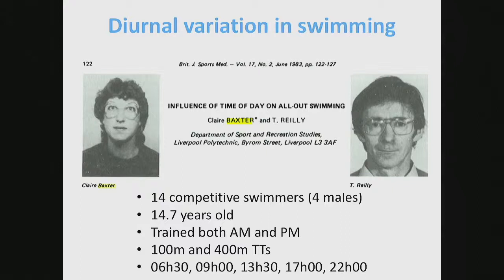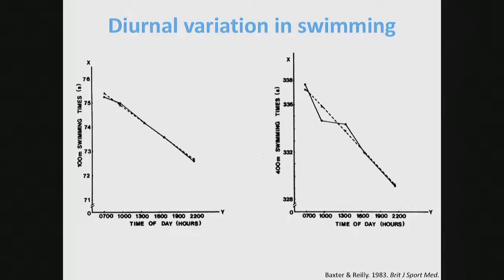This was Claire Baxter and Thomas Riley, who were really the founders of circadian research into human performance. This is a study they conducted in the early 80s, looking at the influence of swimming time of day on all-out performance. They had 14 competitive swimmers, mostly females, average age 14. They trained both mornings and evenings and were tested over 100 and 400 meter time trials at 6:30 in the morning, 9, 1:30, 5, and 10 o'clock at night. Looking at the 100 meter times against time of day, from 7 in the morning till 10 at night they just got faster. The same for the 400 meter - they just got faster as the day went by.